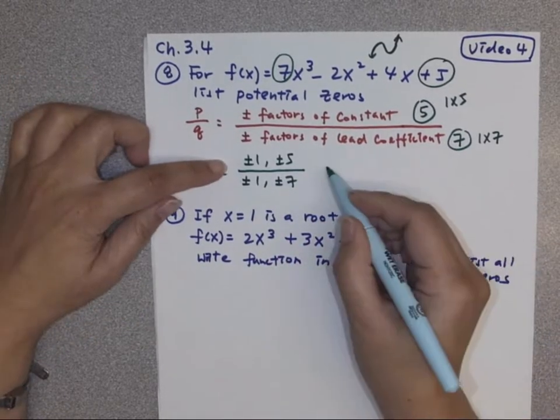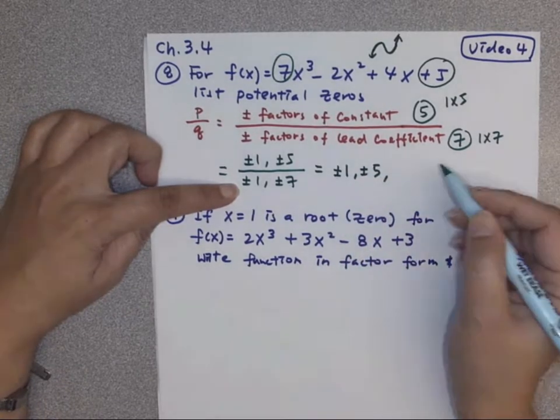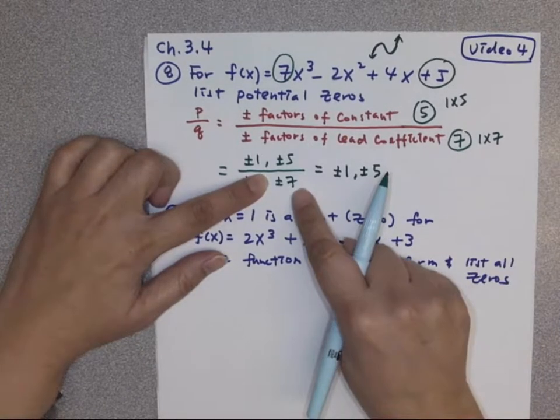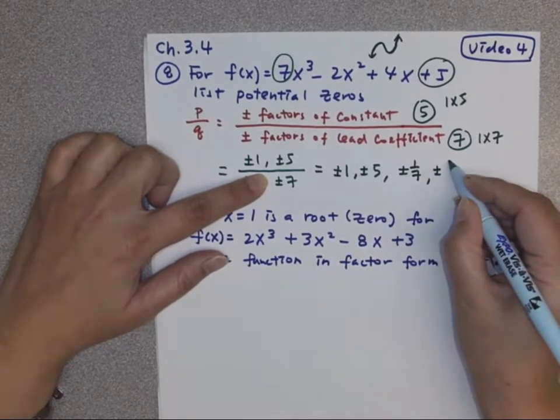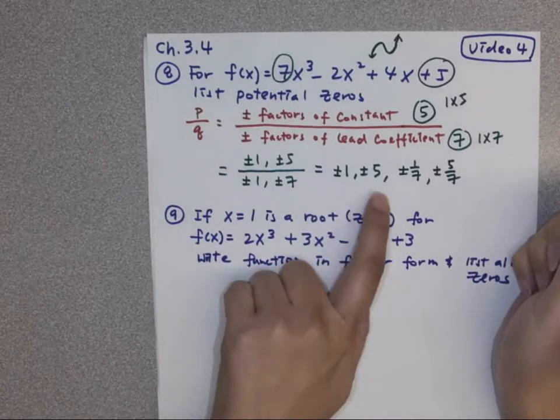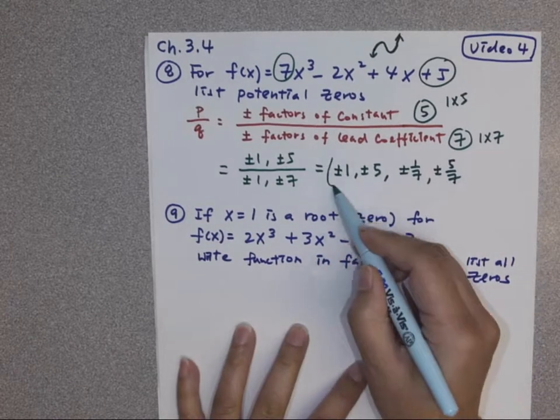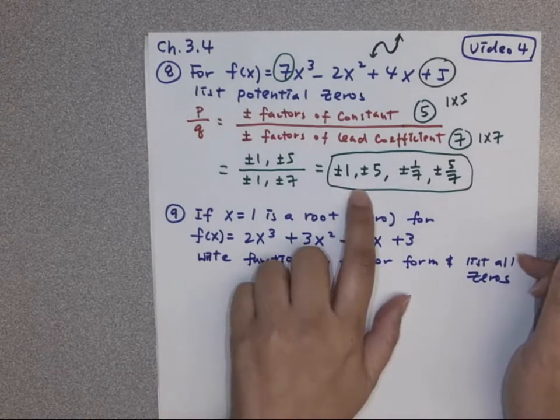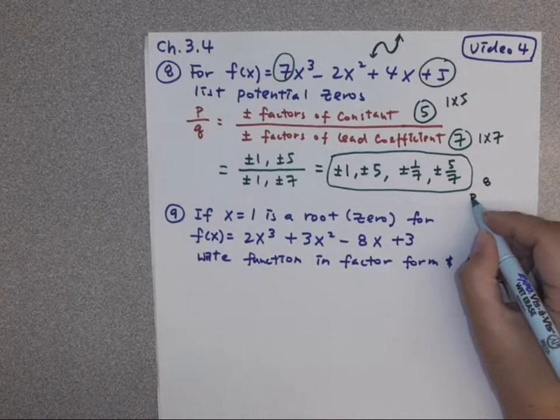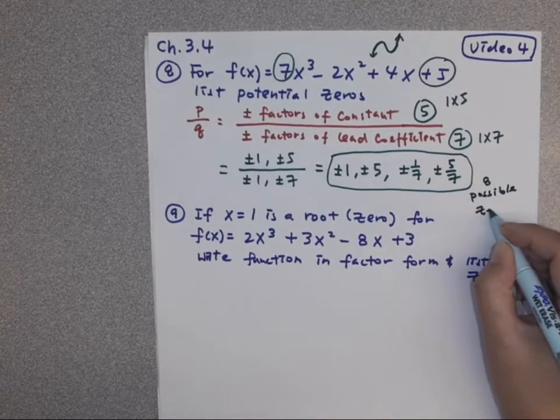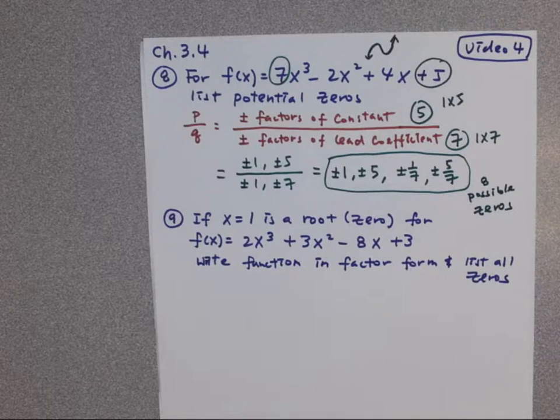So which means all the numbers on top need to be divided by plus minus 1. So plus minus 1, plus minus 5. And then all the numbers on top need to be divided by plus minus 7. So we have plus minus 1 over 7, and then plus minus 5 over 7. So plus minus 1, and then I have plus 5, minus 5, etc. Totally, we are going to have, instead of negative infinity to positive infinity, now we narrow it down to 2, 4, 6, 8 possible zeros.